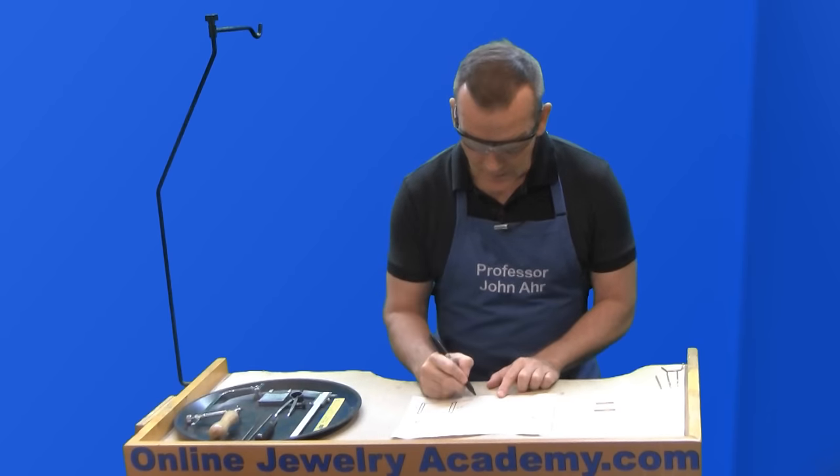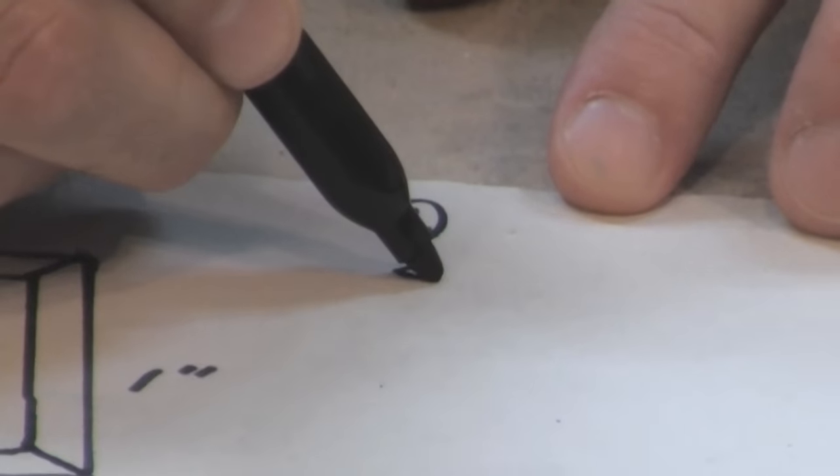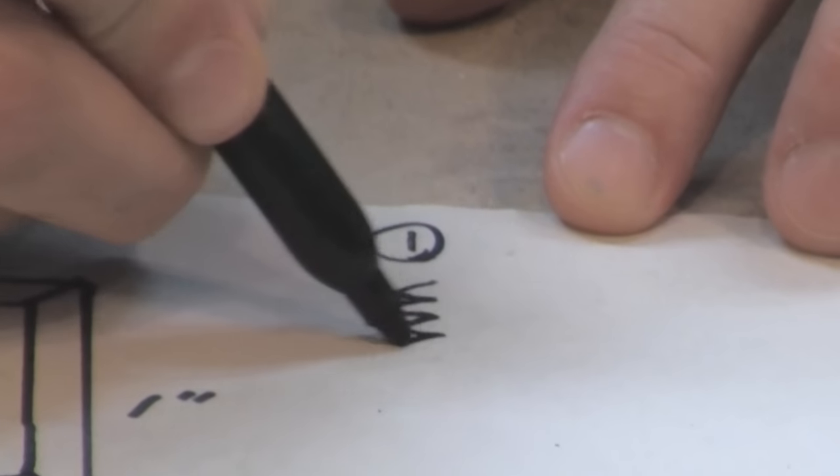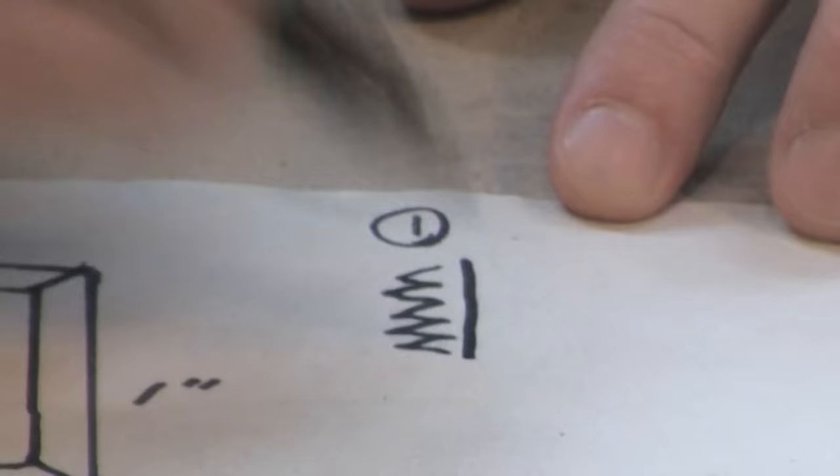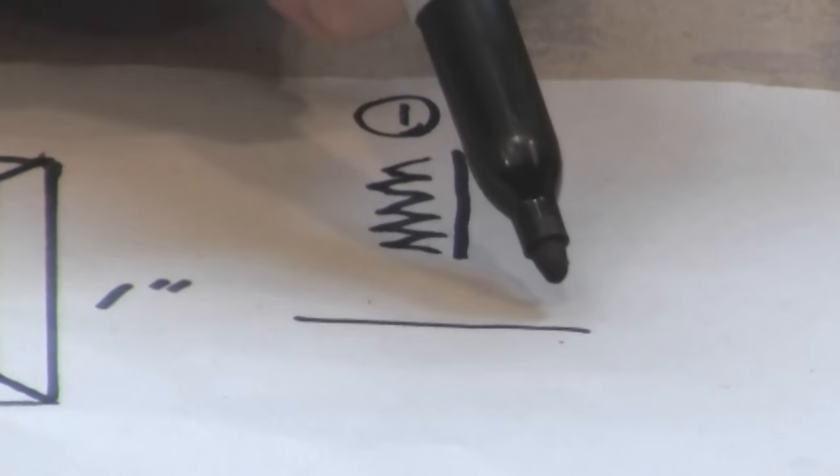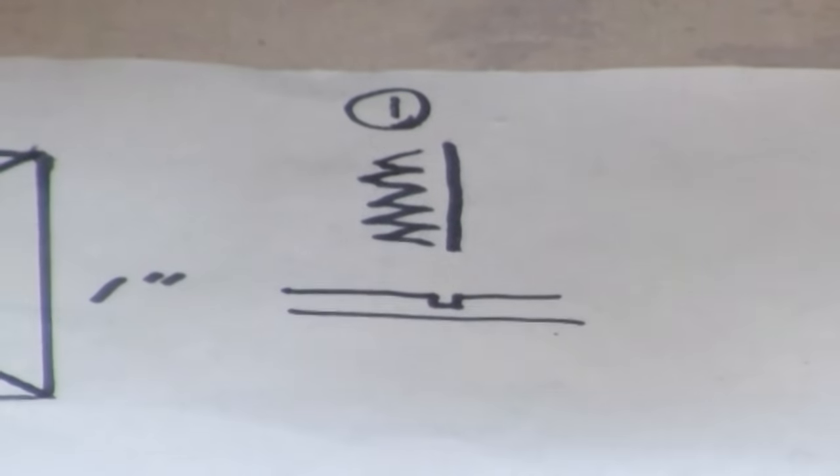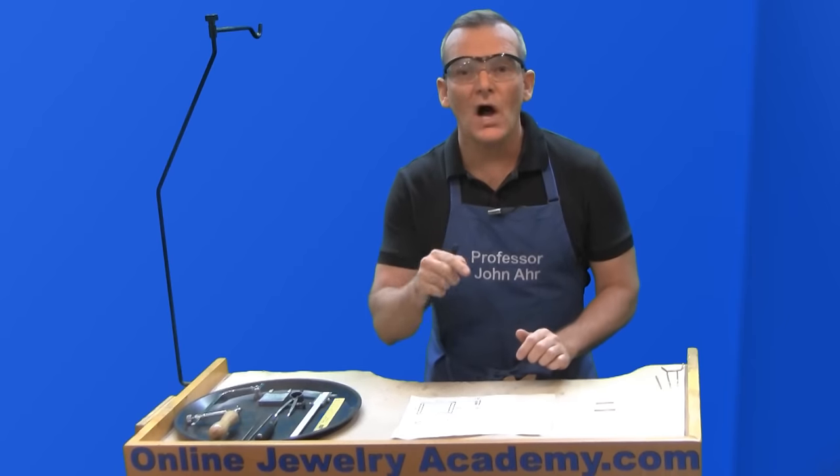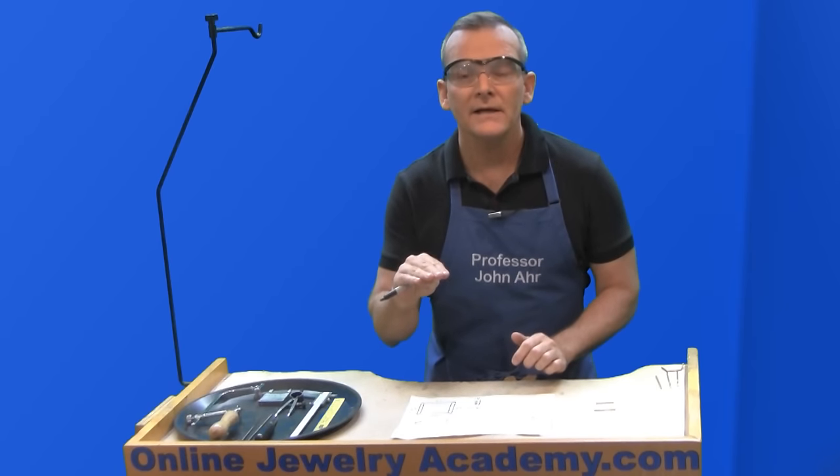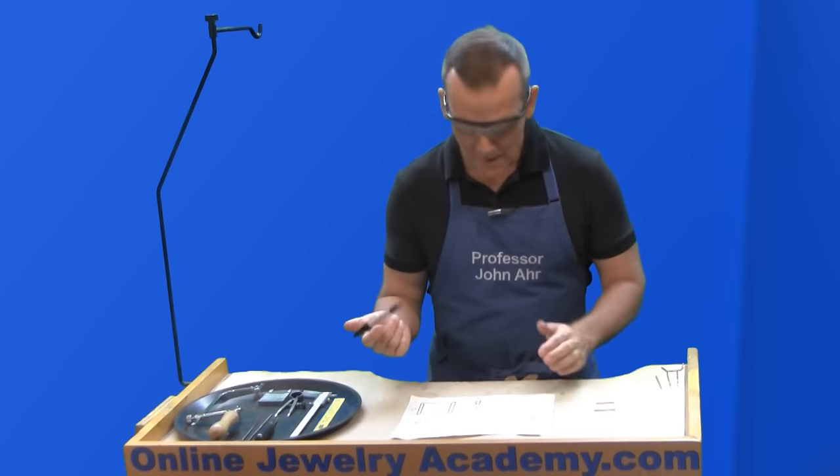So the first step that we're going to do, it's going to involve your saw blade. And what the saw blade is going to do is it's going to be used to just become a little notch on the top of your wire. You're just going to saw to the depth of the blade. And this just makes a guide for you to use with the files.